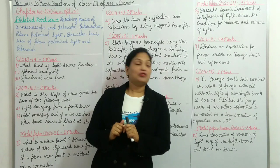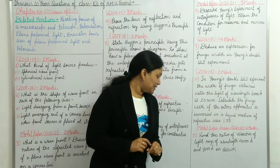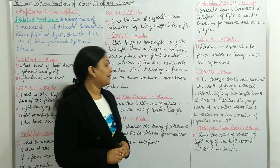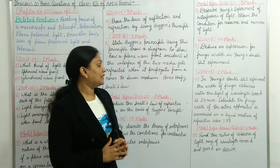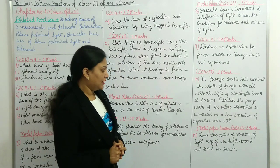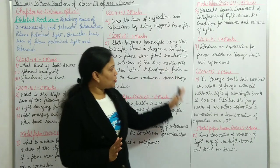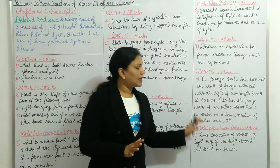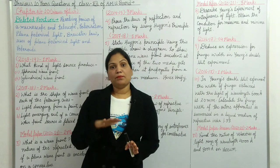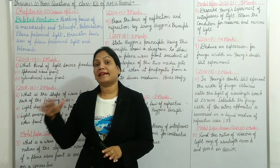Question number eleven, which appeared in this year's model paper: find the ratio of velocities of light rays of wavelength 4000 Angstrom and 8000 Angstrom in vacuum. The other questions are also based on Young's double slit experiment, so you must prepare this topic thoroughly.